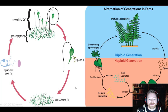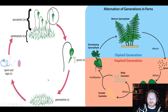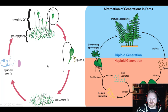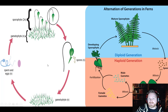Remember that there are two different life stages: the gametophyte and the sporophyte. Gametophytes produce gametes, sporophytes produce spores. And in different types of plants — vascular versus non-vascular — the gametophyte can be dominant in one and the sporophyte can be dominant in the other.